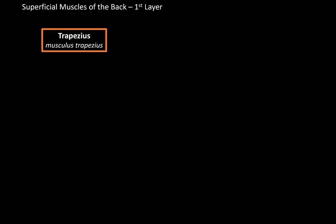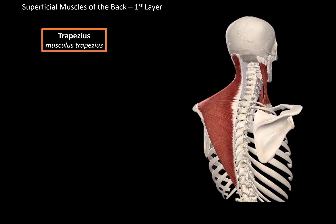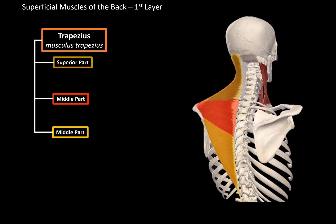We will start with the first layer — the trapezius. The trapezius is this large muscle that takes up the majority of your shoulders. They can also be classified as the cranio-thoracic muscles, in addition to being one of the superficial muscles of the back. The trapezius consists of three parts: a superior part, a middle part, and an inferior part.